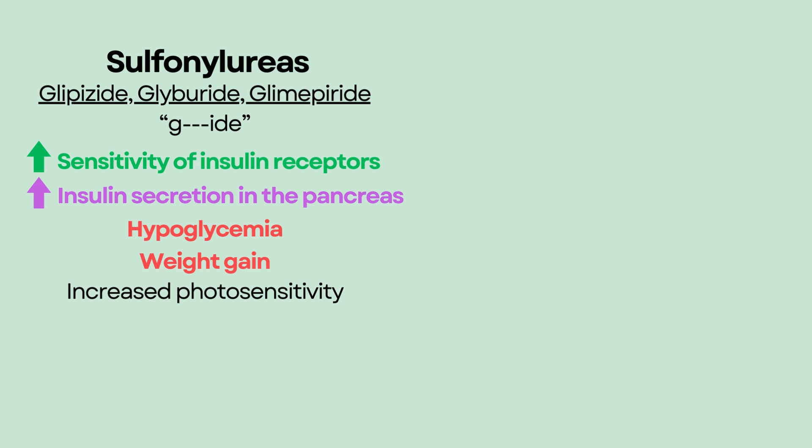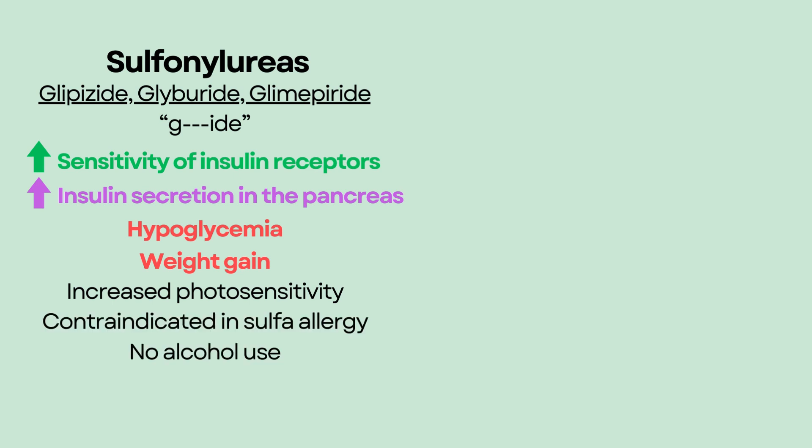Sulfonylureas can also cause increased photosensitivity, so educate patients to use sunscreen and wear sun-protective clothing. It is also contraindicated in those with sulfa allergy, and alcohol use should be avoided because it can lead to a disulfiram-like reaction. Disulfiram is a drug used to treat alcoholism that causes unpleasant symptoms when alcohol is consumed.